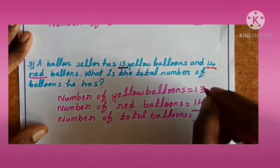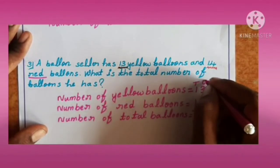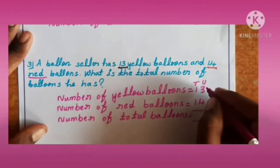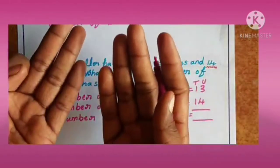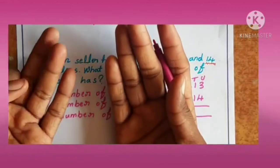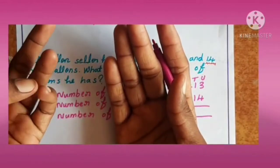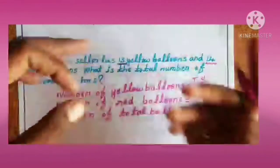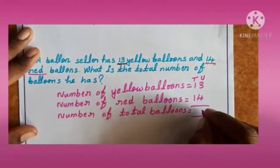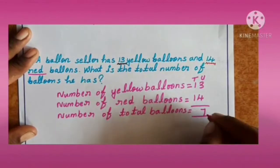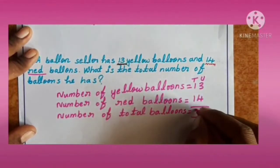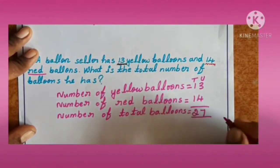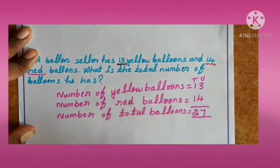You add 13 plus 14. First, add units: 3 plus 4. Count now: 1, 2, 3, 4, 5, 6, 7. Next, 1 plus 1 is 2. So total 27 balloons.